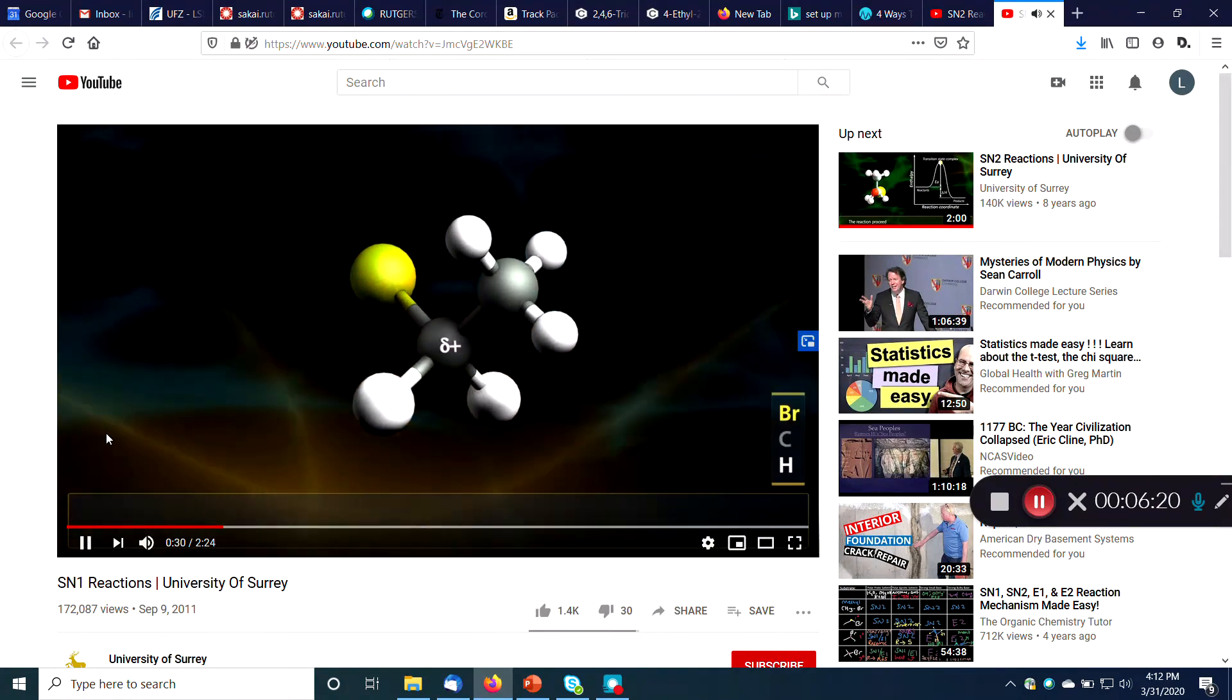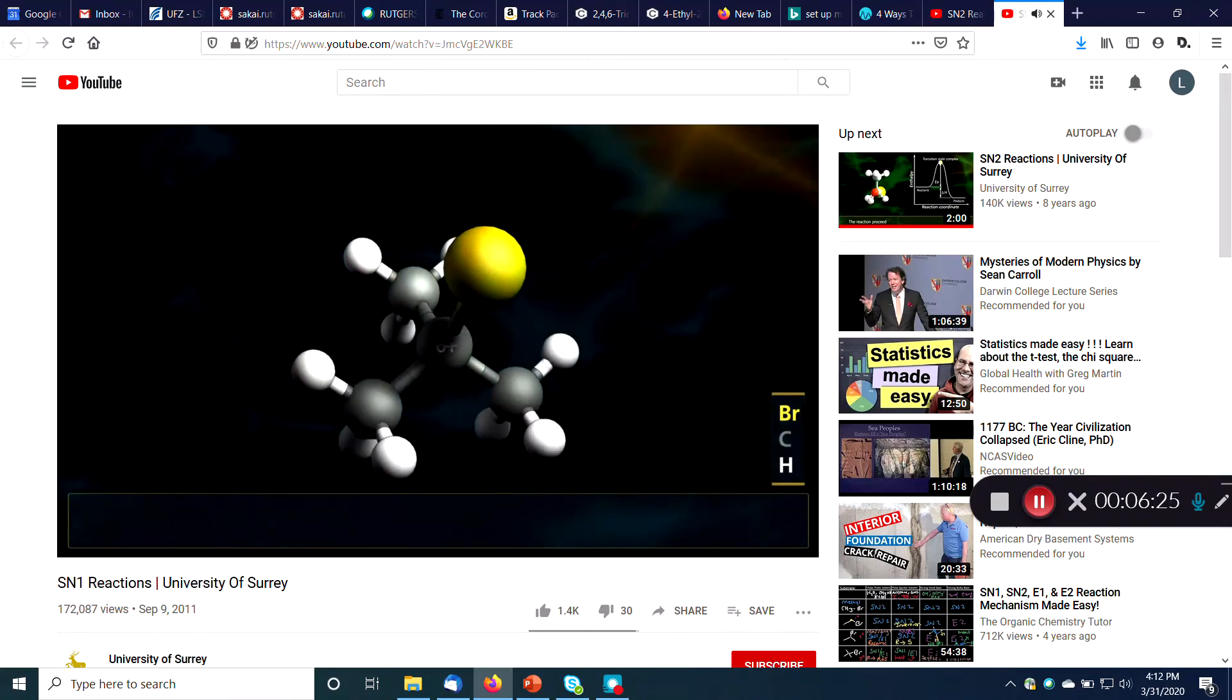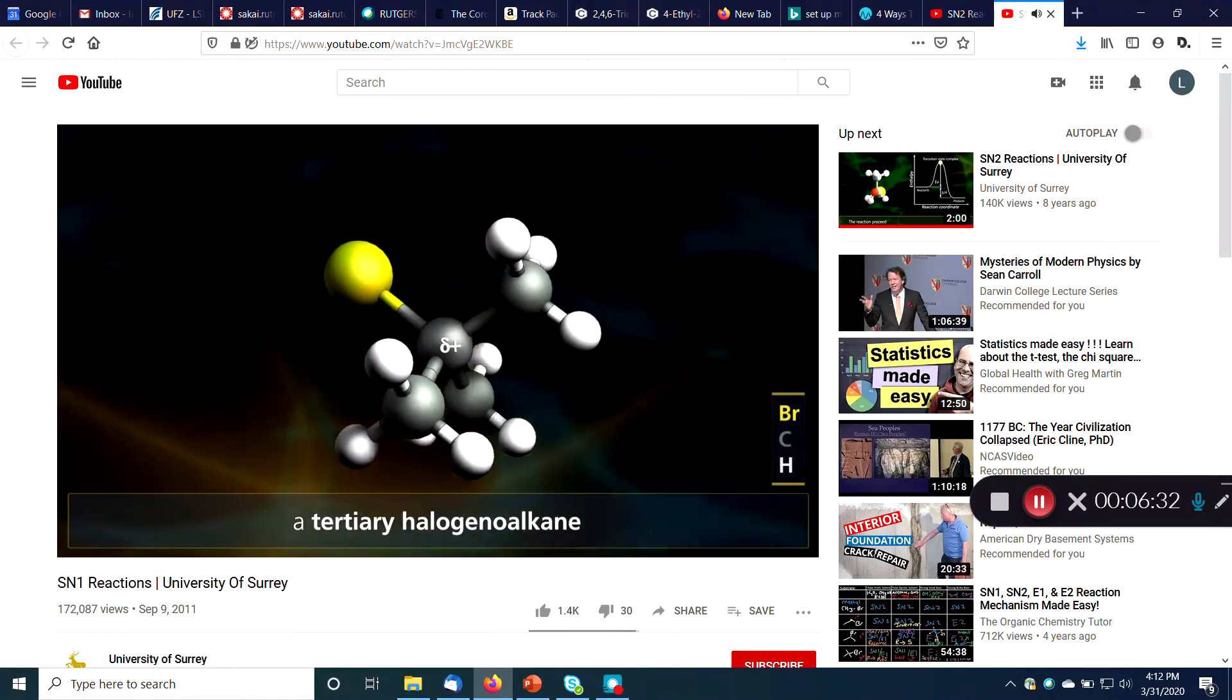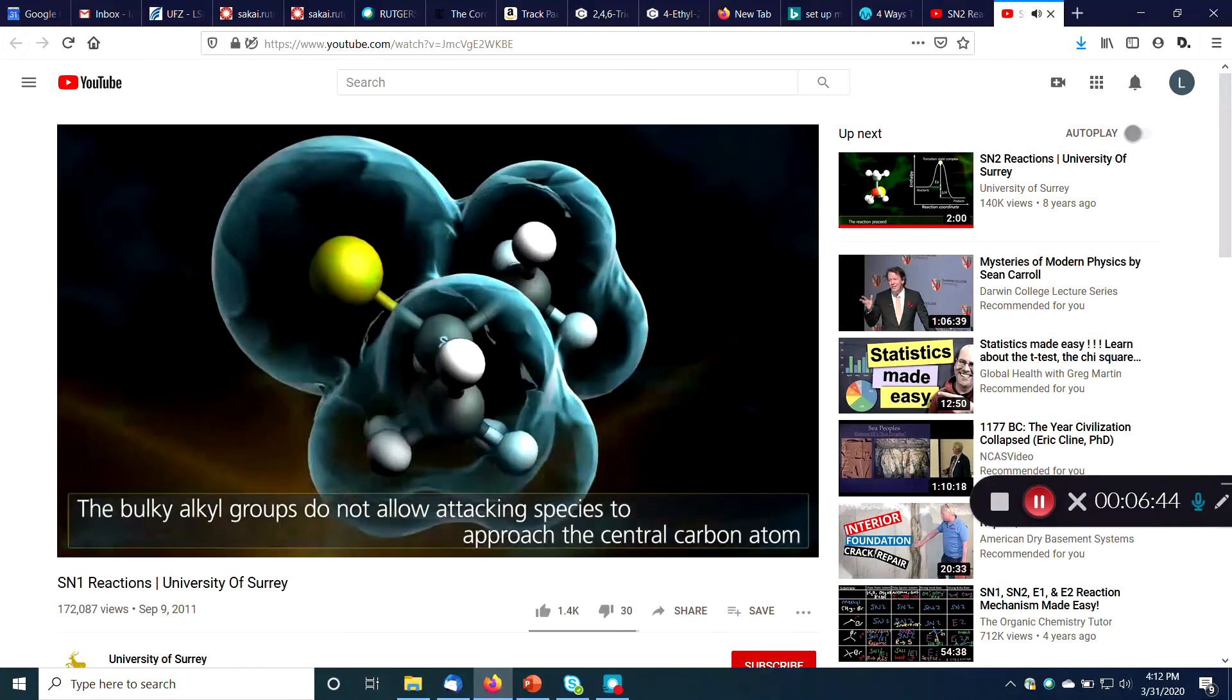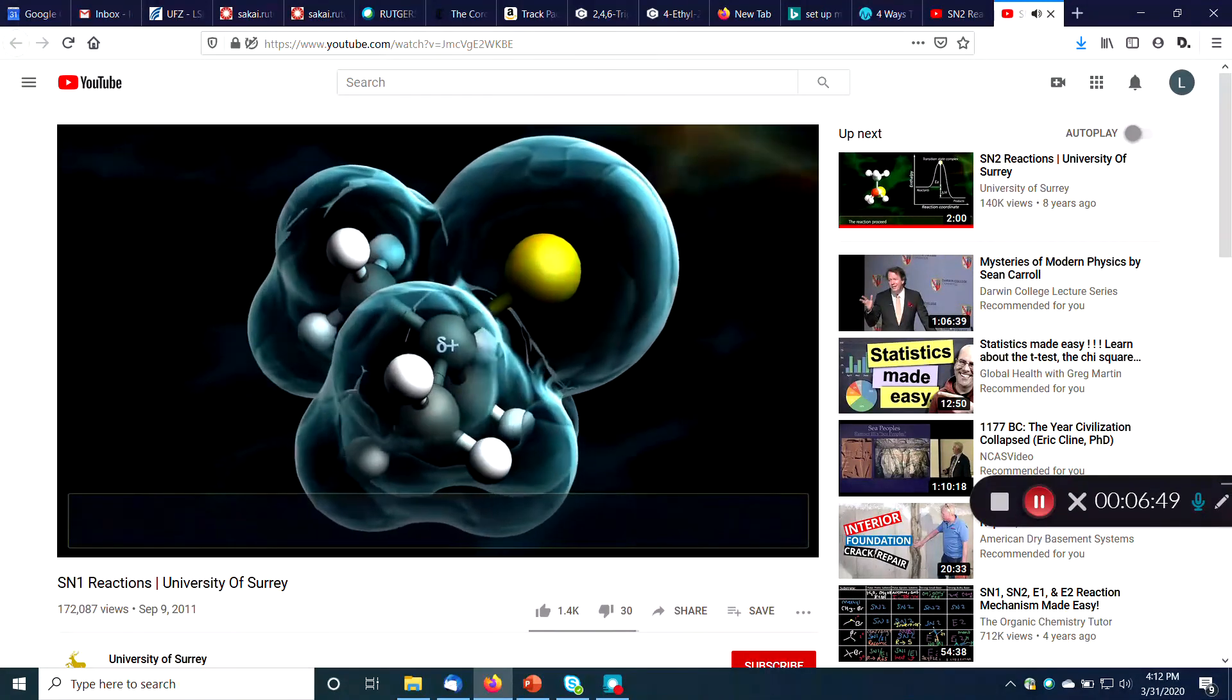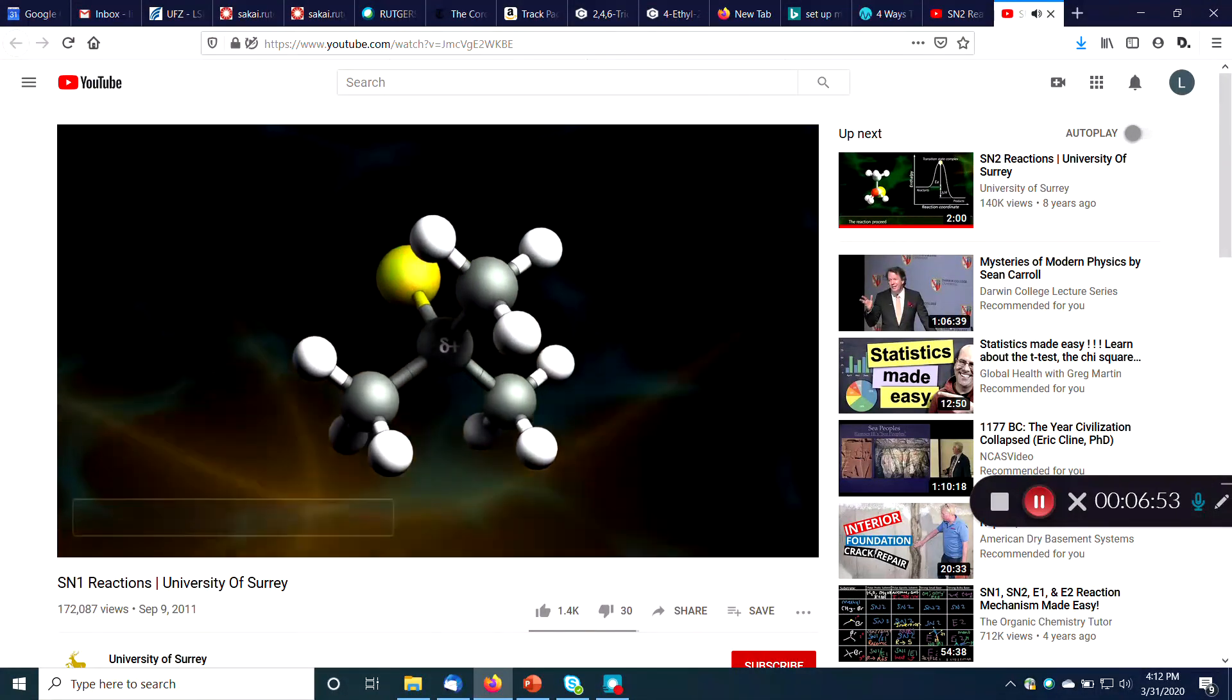So the video is talking about how what you're looking at is bromoethane, which is the same chemical you saw in the previous video. That chemical would go by an SN2 mechanism. But if you replace those hydrogens with methyl groups, now you have a much more sterically hindered carbon there in the middle. And so the SN2 mechanism isn't going to work anymore. So those bulky, as you can see in the captions, the bulky alkyl groups do not allow attacking species to approach the central carbon. And you can see by providing that halo, it's showing you really what the size of this molecule is. And the nucleophile just can't get in there.